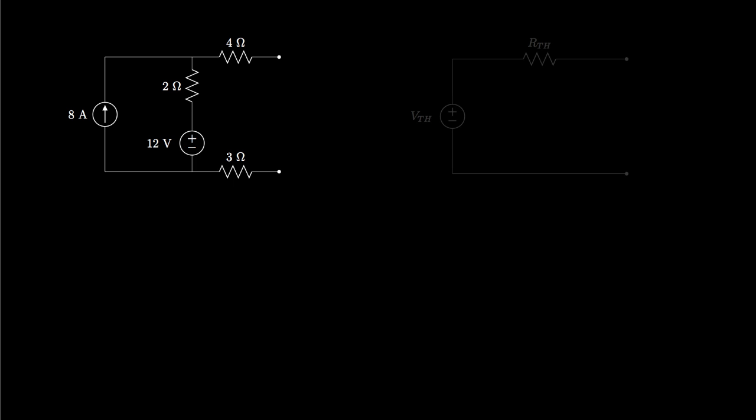Let's begin by looking at a circuit that has one current source, one voltage source, and three resistors. The Thevenin Theorem states that this circuit is equivalent to a much simpler circuit that contains a single voltage source in series with a single resistor. The value of the voltage source is called the Thevenin voltage and the value of the resistance is called the Thevenin resistance.